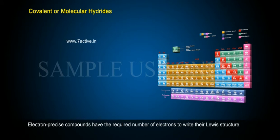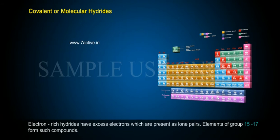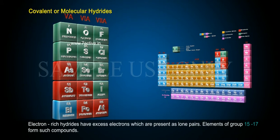Electron-precise compounds have the required number of electrons to write their Lewis structure. Electron-rich hydrides have excess electrons which are present as lone pairs. Elements of groups 15-17 form such compounds.